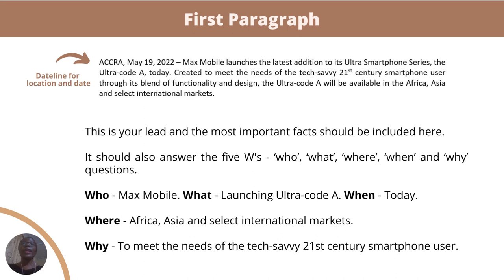After the headline comes the first paragraph, but before that you'll see the dateline — 'Accra, May 19, 2022' — the location and date. This gives the journalist context as to where this story is coming from and where the organization operates. The first paragraph reads: 'Max Mobile launches the latest addition to its Ultra smartphone series, the Ultra Code A, today, created to meet the needs of the tech-savvy 21st century smartphone user through its blend of functionality and design. The Ultra Code A will be available in Africa, Asia, and select international markets.'